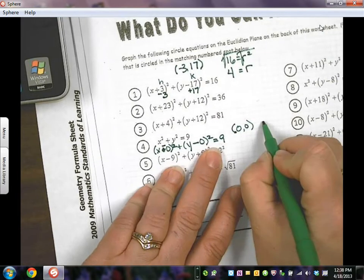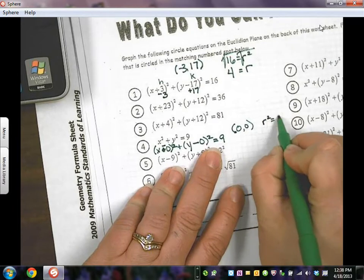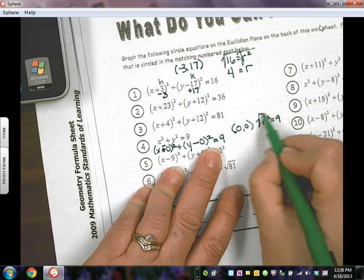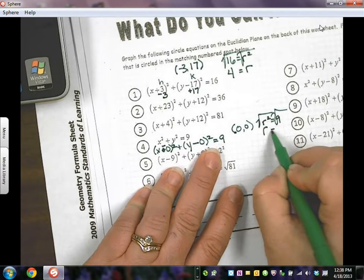Now I know that R squared equals 9. So take the square root of both. I know my R is 3.